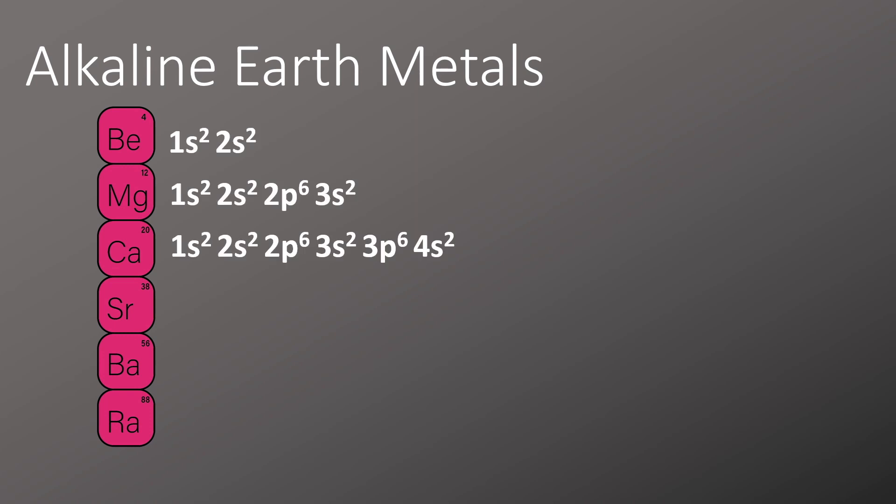As you remember from GCSE, we form 2+ ions of all these as they're in group 2, so we lose the outermost electrons - that's the 2s² for beryllium, the 3s² for magnesium, and the 4s² for calcium.